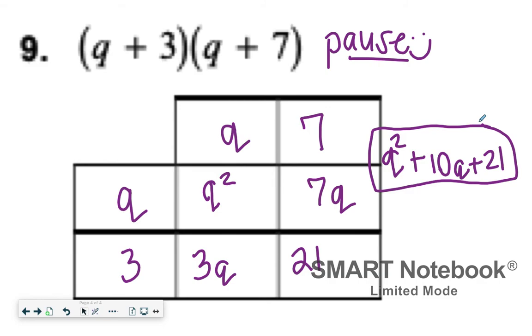I didn't show you any examples with a binomial times a trinomial, but it would still be the same concept. Instead of you having just a two by two table, you would have a two by three table. And that extra column would just be here on this side. So you would have a lot more things that you need to combine, but it still works the same way.